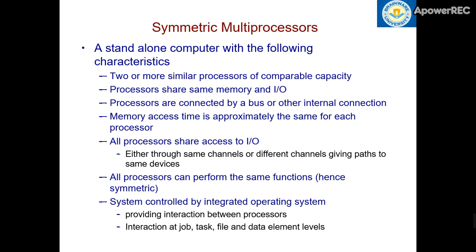We will talk about symmetric multiprocessors. What do we actually mean by the term symmetry? Symmetry means that in terms of some characteristics, the features of different processes are the same, or we can say that two different processes exhibit a similar set of characteristics for a particular process.